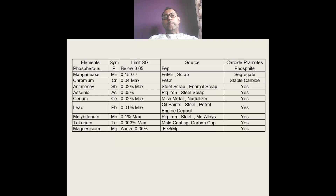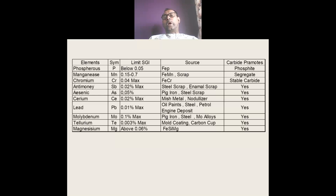Chromium is a very important element. If it crosses a limit of 0.04% or 0.05% in ductile iron, it can give you stable carbide which is very difficult to remove even after heat treatment. So controlling chromium below 0.04% or 0.05% in ductile iron is very essential. Elements like antimony, arsenic, cerium, lead, molybdenum, and tellurium can also be carbide promoters if they cross their limit in ductile iron. The details of limits and sources are also mentioned in the attached table.